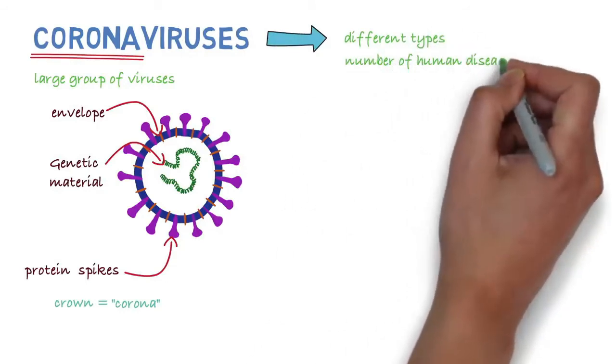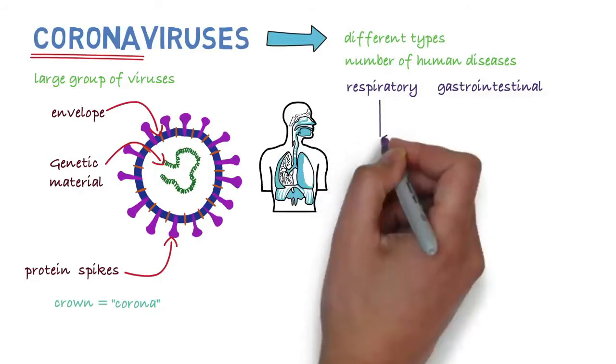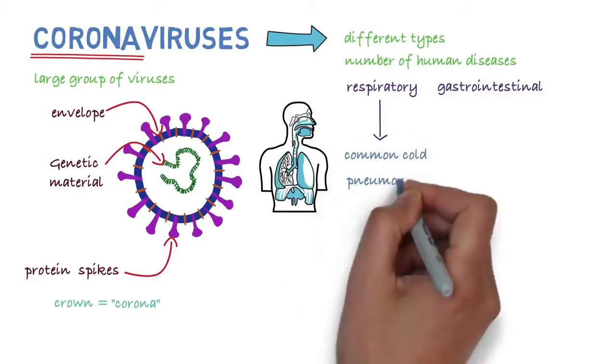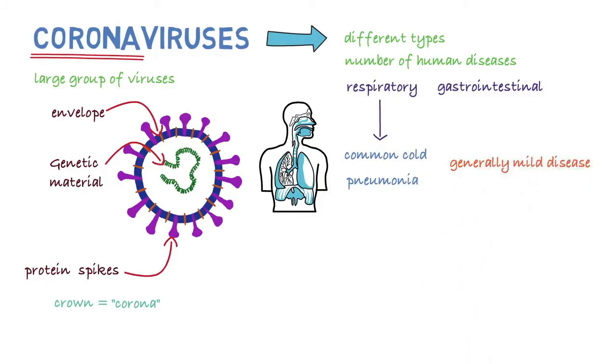There are different types of coronaviruses that cause a number of human diseases, such as respiratory and sometimes gastrointestinal disease. The respiratory disease can range from the common cold to pneumonia, and in most people the symptoms tend to be mild.